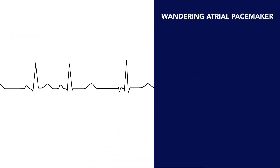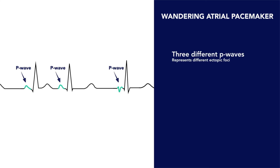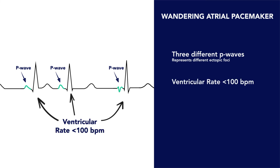In summary, wandering atrial pacemakers are defined by two characteristics. The first is that there should be at least three distinctly different P waves, which is the result of action potentials originating from different atrial ectopic foci. And the second being that the ventricular rate should be less than 100 beats per minute.